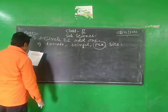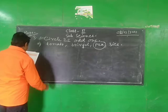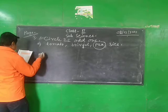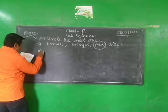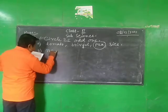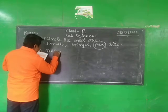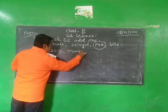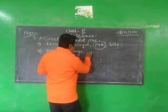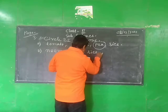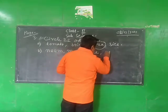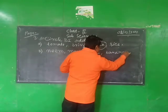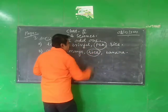Number 2: sugar, neem, mango, rice, banana. The odd one is rice — it is just a plant.